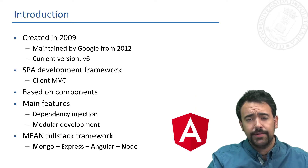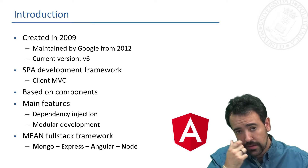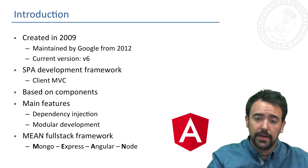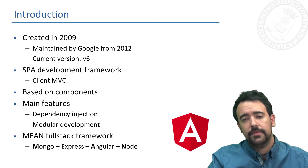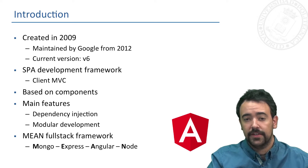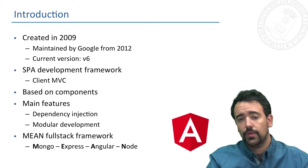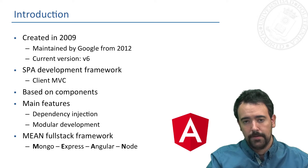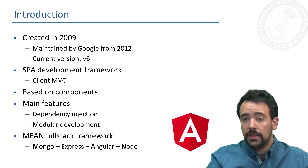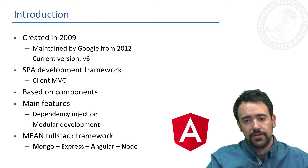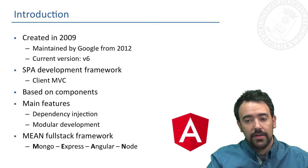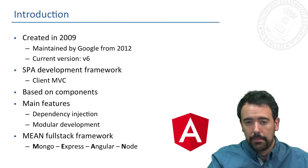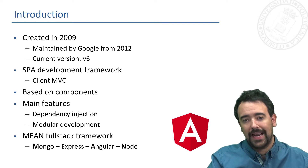Angular is a technology created in 2009 and from 2012 was maintained by Google. The current version of this framework is version six, which is the version we are going to use during this MOOC. Thanks to Angular we can develop single page applications totally on the client side, so all of the model-view-controller pattern is included in the client part of our application.